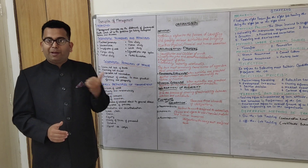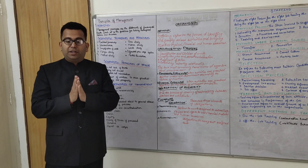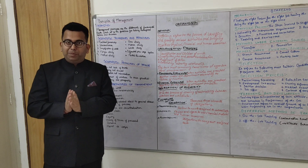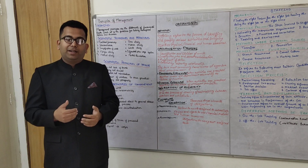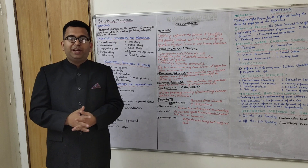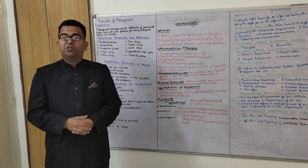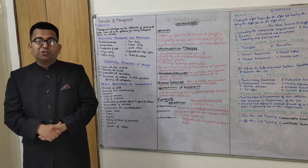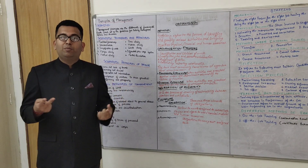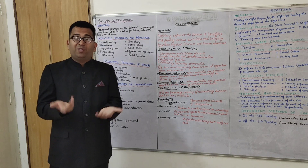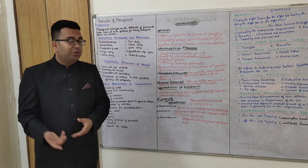Time study refers to first recording the time taken by workers for a particular task, then dividing it by the number of persons. What comes out is a standard time. A stopwatch helps find that mean time — that is time study. Motion study refers to eliminating unproductive movements, because there are two types of movements: productive and unproductive. This is done with the help of a moving camera to eliminate those unproductive movements.